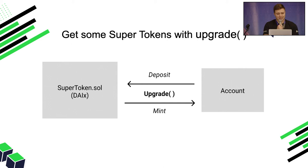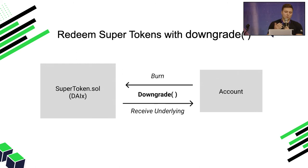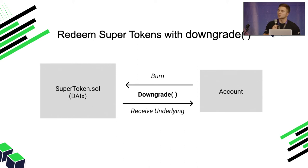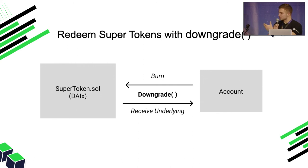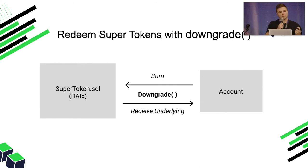So if I have DAI, I can upgrade that DAI and get super token DAI in return, which is just DAIx. And if I ever want to downgrade — meaning unwrap it — I can call downgrade and get those ERC20 tokens back; the super tokens are just burned. The advantage is that the real-time balance is always calculated, so you can always be assured that the number of ERC20 tokens you have wrapped will be available to you to downgrade at any time.